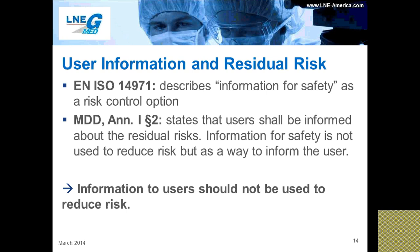The last point of clarification is related to user information and residual risk. As seen a couple of slides before, the standard includes the information provided to users that details the safety and risk of the device as a risk control option. In other words, the standard uses information for safety as a way to control the risk of the device to the user. The directive, on the other hand, doesn't use the information provided to users as a way to reduce the risk of the device. Instead, the information is simply a way to inform users of the residual risk. In this sense, manufacturers shouldn't attribute any risk reduction to the information to users for safety. For example, writing in an IFU or user manual that there may be a risk of allergy or irritation doesn't reduce or eliminate the risk itself. This should be done using another method, such as choosing the material. It gives the end user information about the residual risk.